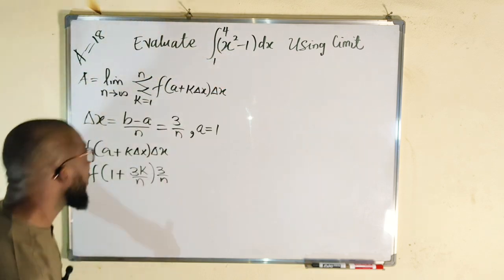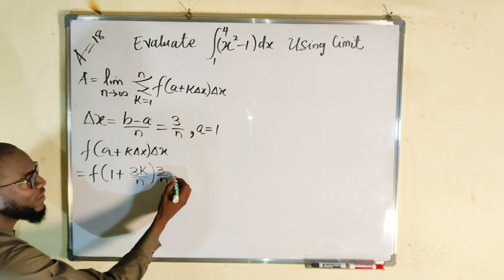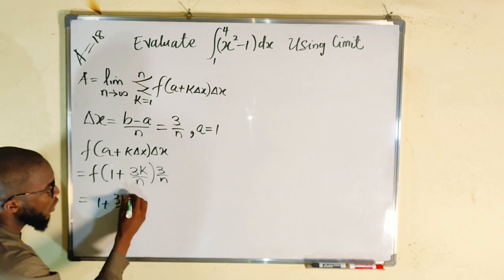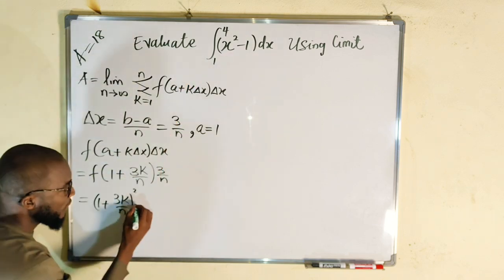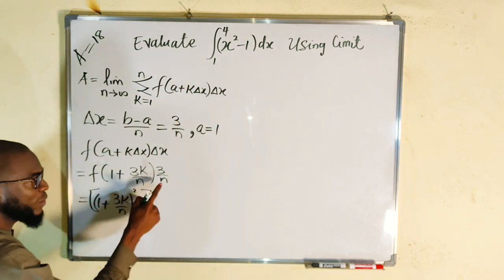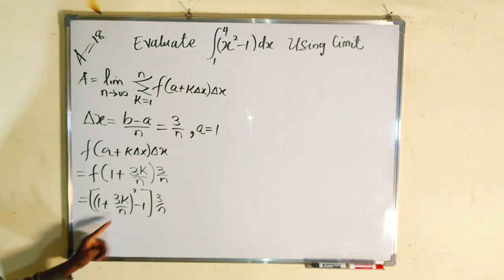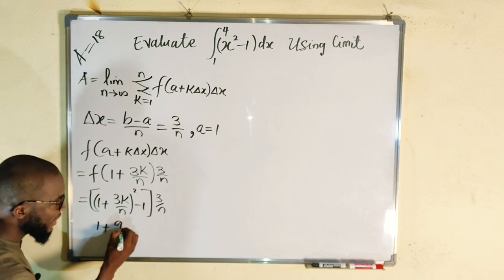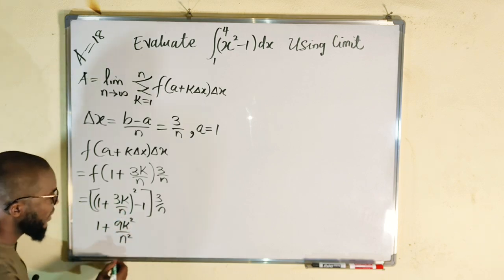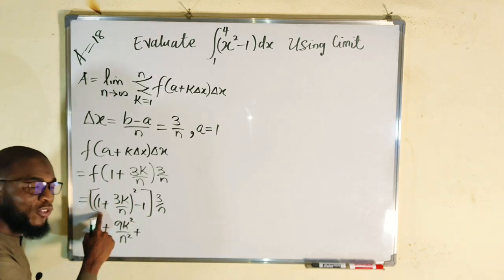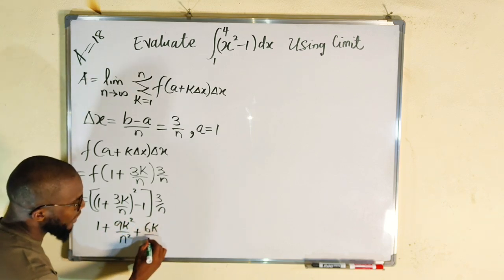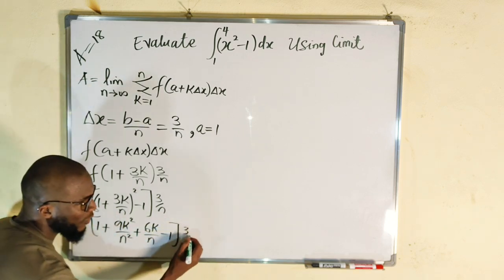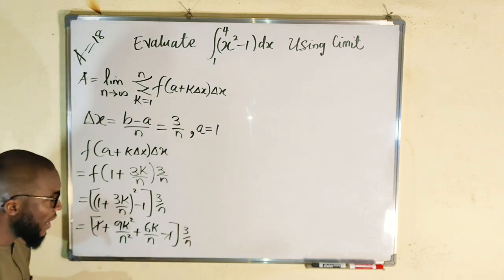From the function, this equals x squared — that is (1 plus 3k over n) whole squared — minus x, which is just 1, minus 1. The whole expression is multiplied by 3 over n. Let's expand the squared term: 1 squared is 1, (3k over n) squared is 9k squared over n squared, plus 2 times 1 times 3k over n, which is 6k over n. Don't forget we have minus 1, which cancels with the plus 1.